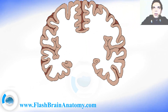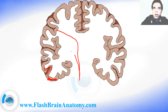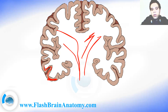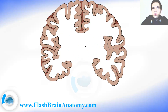Then comes the white matter. This was the gray matter. All the cortex is gray matter, and the fibers coming from the cortex and on are called the white matter.